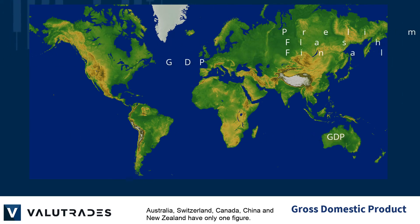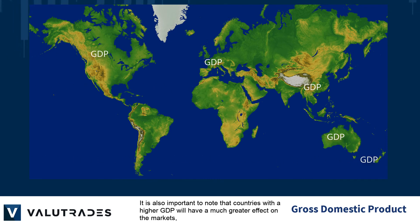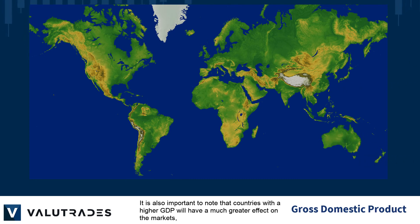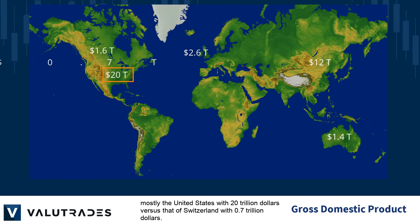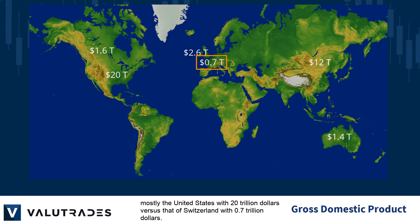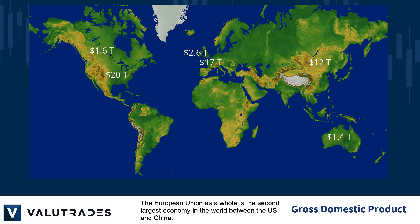Australia, Switzerland, Canada, China, and New Zealand have only one figure. It is also important to note that countries with a higher GDP will have a much greater effect on the markets — mostly the United States with $20 trillion versus Switzerland, say, with $0.7 trillion. The European Union as a whole is the second largest economy in the world, between the US and China.